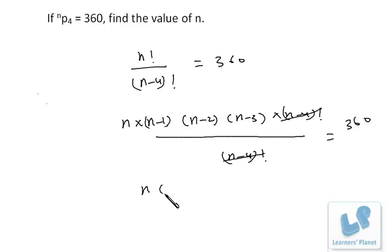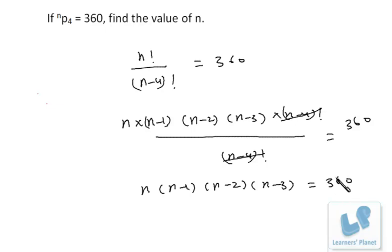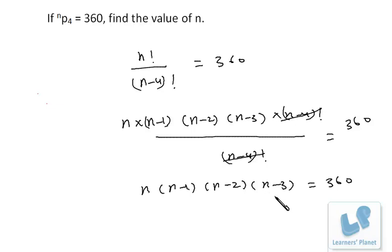So n × (n−1) × (n−2) × (n−3) equals 360. These are four consecutive positive integers and their product is 360. Instead of solving this biquadratic equation, we just go for hit and trial to get the value of n.